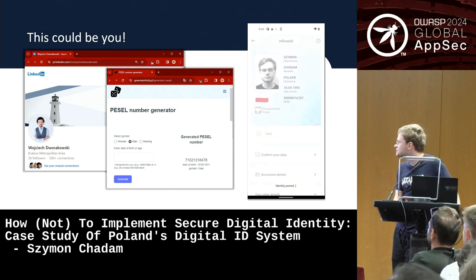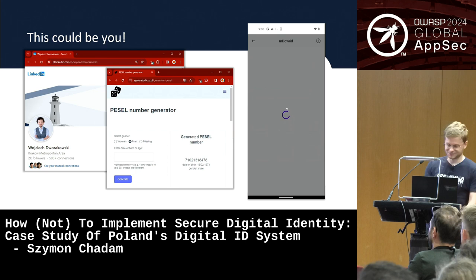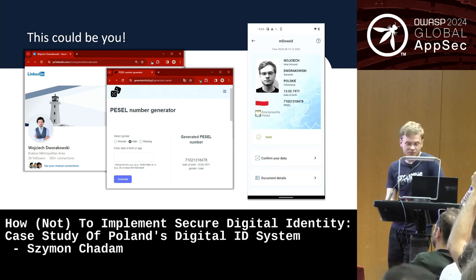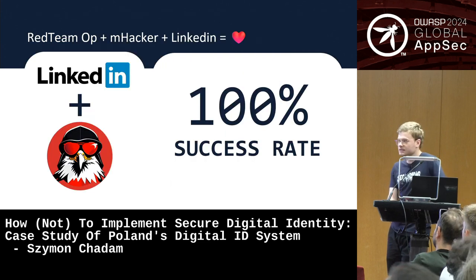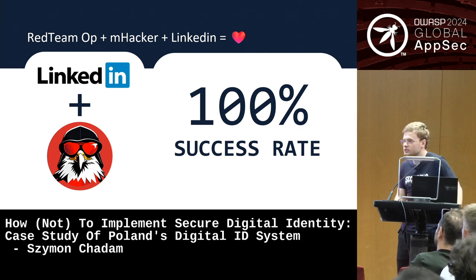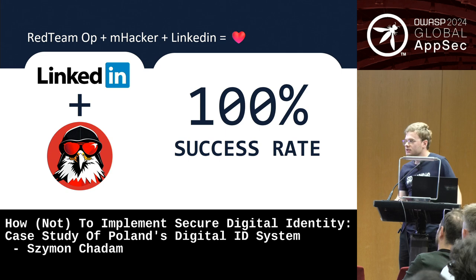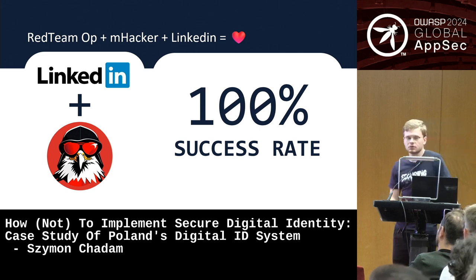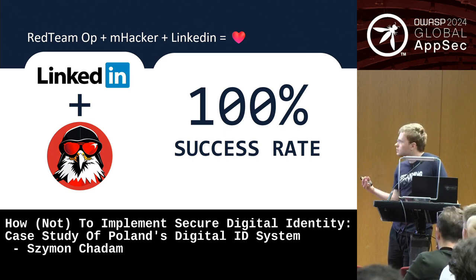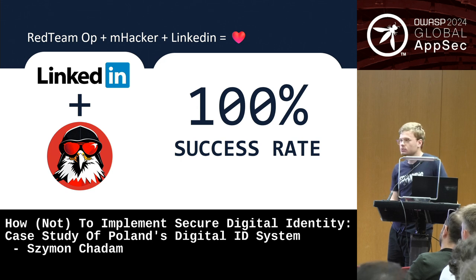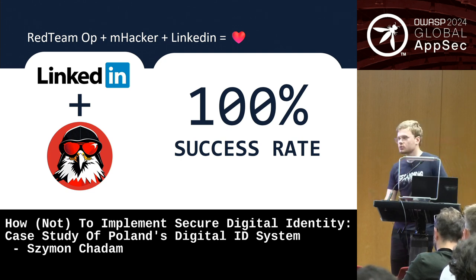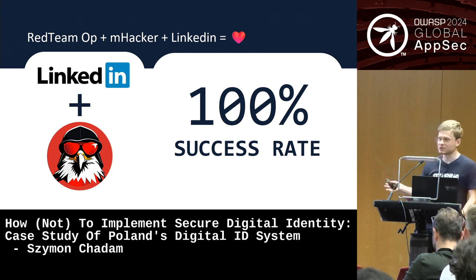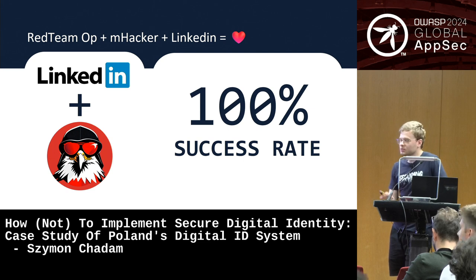Imagine someone checking out LinkedIn profiles, collecting basic details, getting a social security number from a random generator, changing his data to your ID, going to the telecommunications company for a SIM swap — and once he has the SIM card, he grabs your social network accounts and you can't do anything about it. I'm basically trying to fake my ID as my boss. This is also one of the techniques an attacker can use for a red team operation — we go to the physical location, change our ID, go to the lobby and say we forgot our badge, and it works 100% of the time.